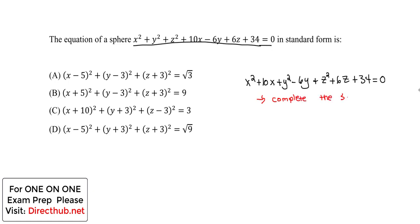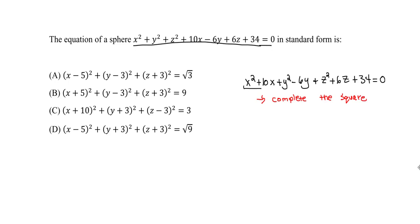Now we complete the square. We look at the x terms first — we're trying to reduce x squared plus 10x into quadratic form. We take the coefficient 10, divide it by 2 to get 5, then square it: 5 squared is 25.